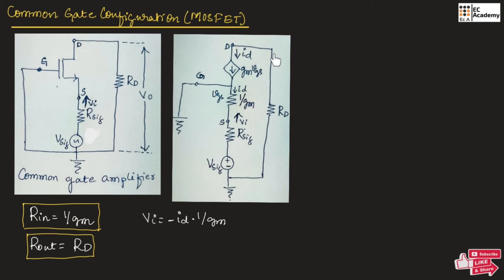Since we are measuring the output voltage at this point, we can write the output voltage as minus id into rd.